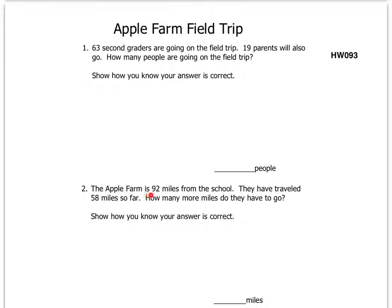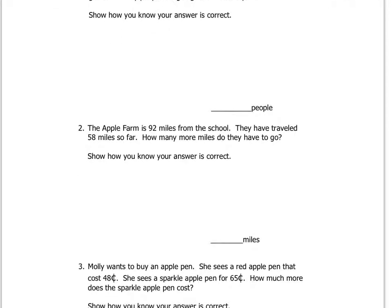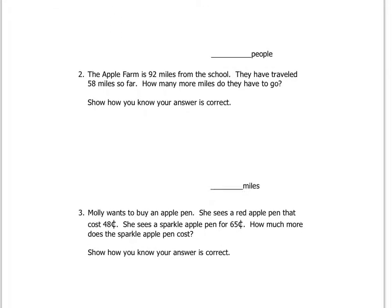Number 2 says: The Apple Farm is 92 miles from the school. They have traveled 58 miles so far. How many more miles do they have to go? So if they've gone 58, how many more miles do they have to get to 92? I'm sure most of us can figure this out in our heads, but we don't want you to figure it out in your heads, because the instructions say right here, show how you know your answer is correct. So you have to show the proof here, and put the miles left to go to the apple farm there.